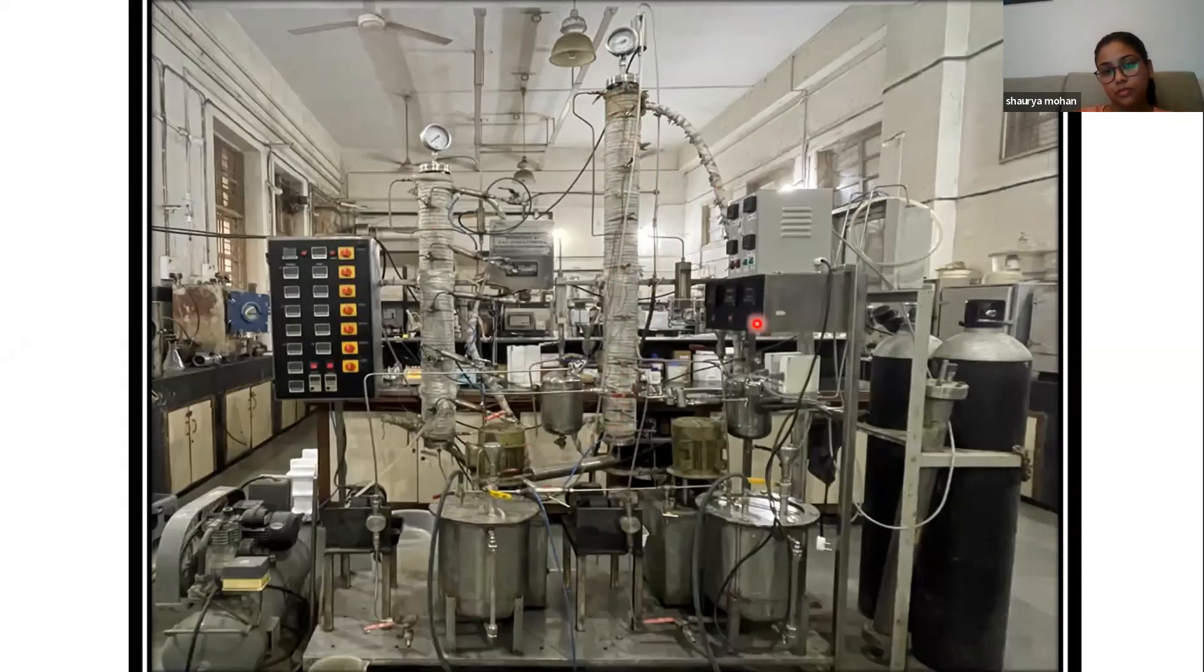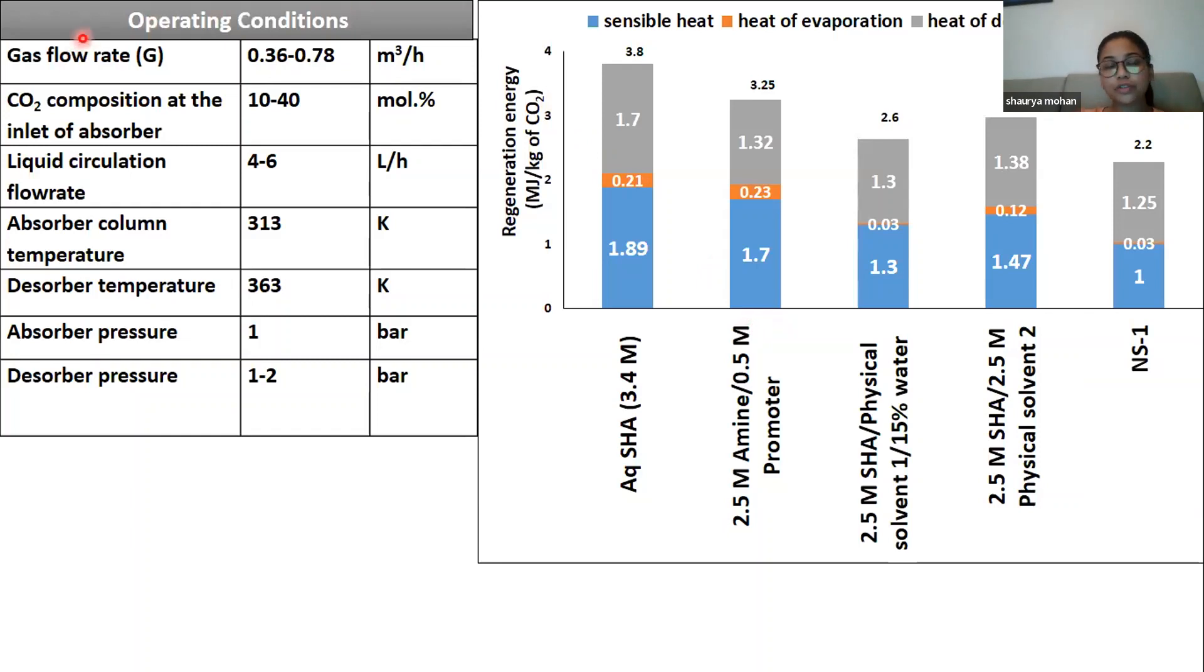So, we have developed the solvent. These were the operating conditions of the pilot plant that we were working on. The CO2 composition, we have varied from 10 to 40%, liquid circulation was this much, and the absorption column was 313 temperature, and the desorption column was 90 degree Celsius. This was the regeneration energy that we have calculated from this pilot plant. For the aqueous you can see it's 3.8 and 3.25, but when the moment we used the non-aqua solvent, the energy got reduced to 0.6 to 0.97, and thus the design solvent that is inus was at 2.2.